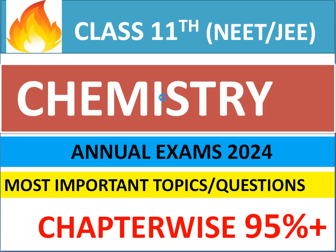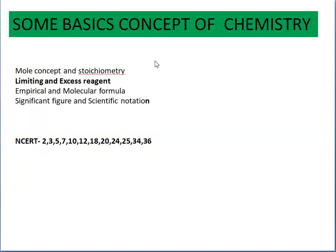First chapter, some basic concepts of chemistry. In this chapter, the important topics are: first of all, mole concept is important, stoichiometry is important, limiting and excess reagent is very important, and the numericals based on limiting and excess reagent will come definitely. Second, empirical and molecular formula, the table given in the NCERT, please go through it, it is very important.